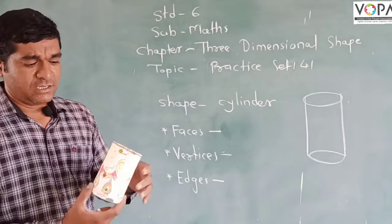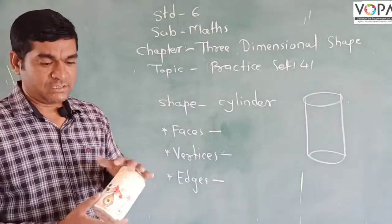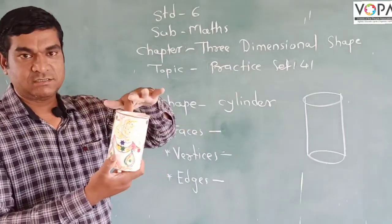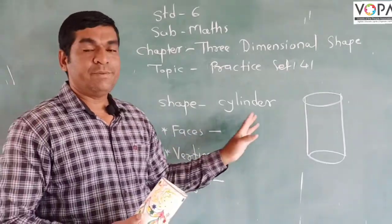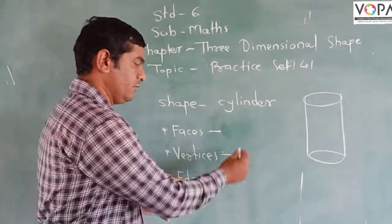From this we see the example. How many faces are there? If you look, there is no face there, only this is one face. This is only one face. So the number of faces in a cylinder is only one.